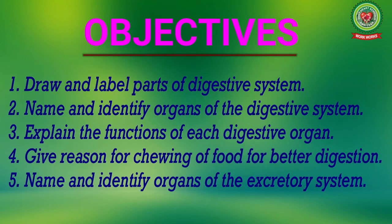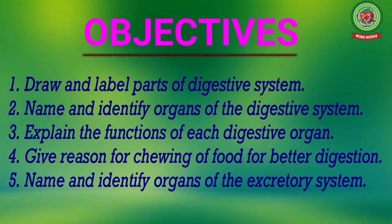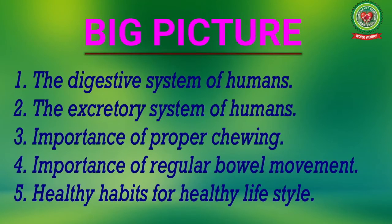The objectives of this chapter are: draw and label parts of the digestive system; name and identify organs of the digestive system; explain the functions of each digestive organ; give reasons for chewing of food for better digestion; name and identify organs of the excretory system.